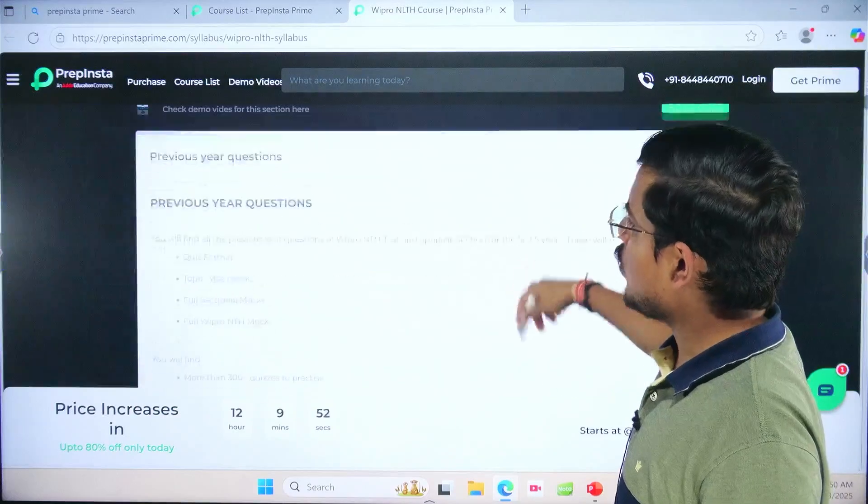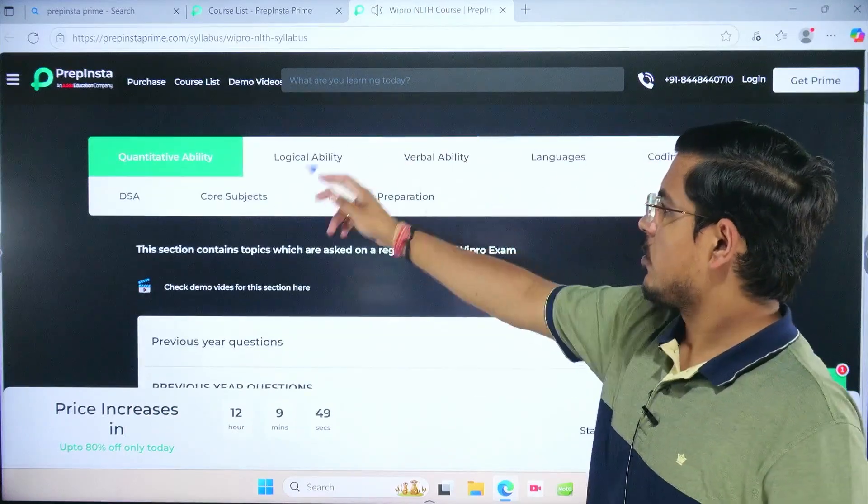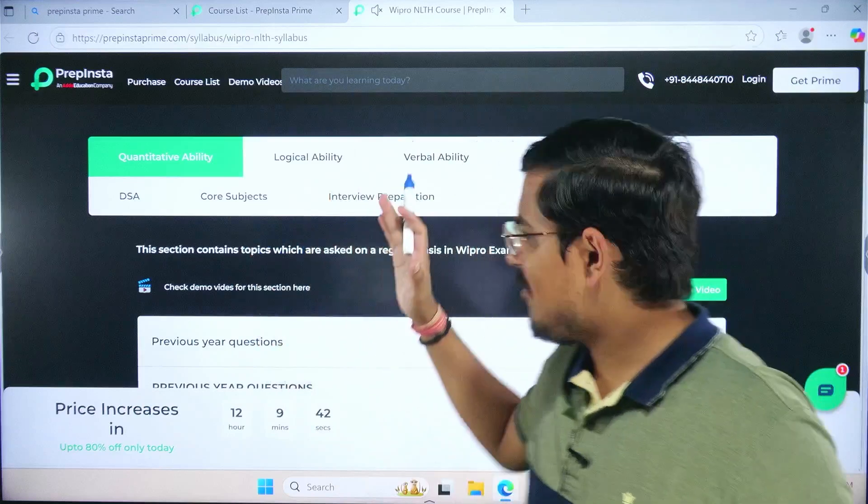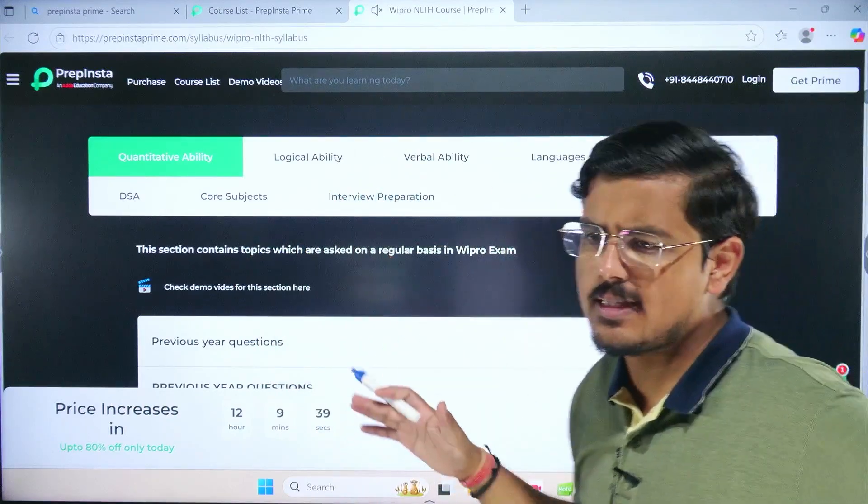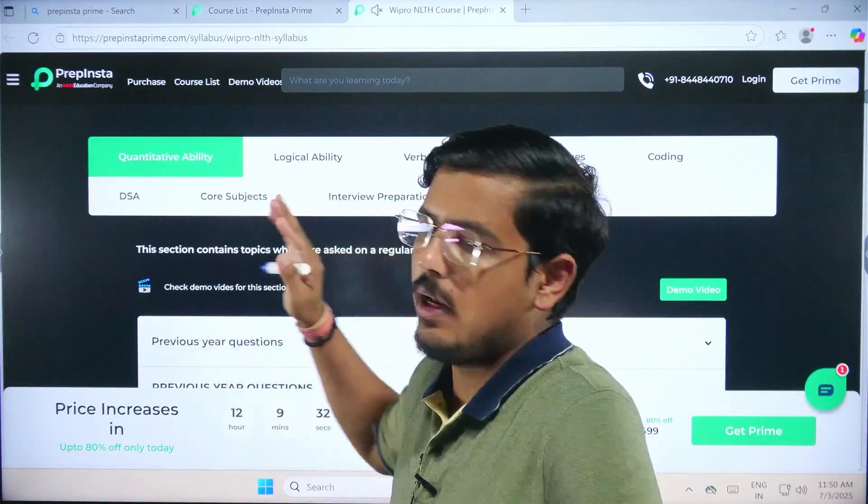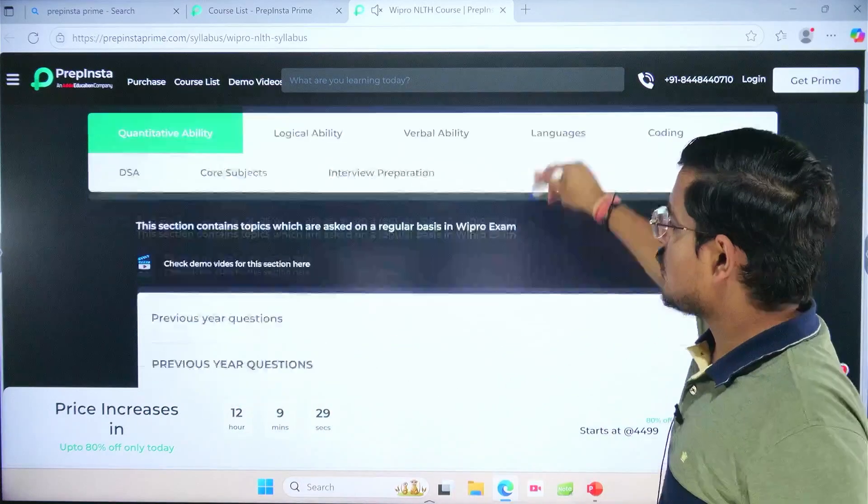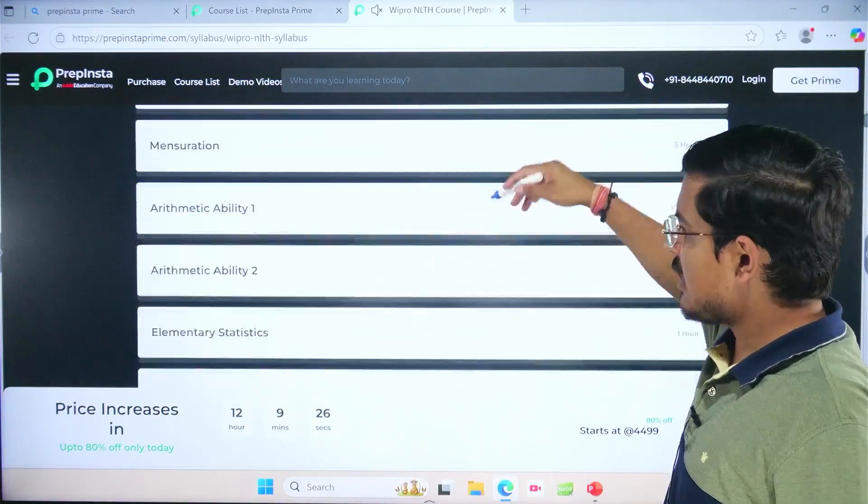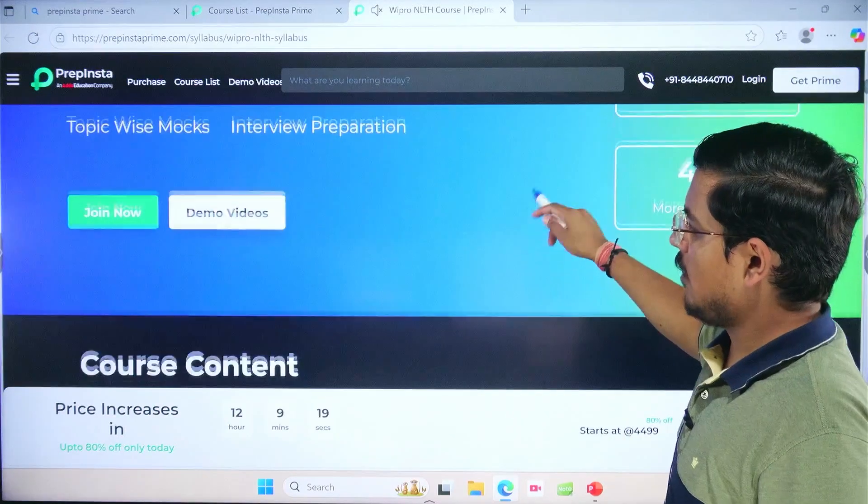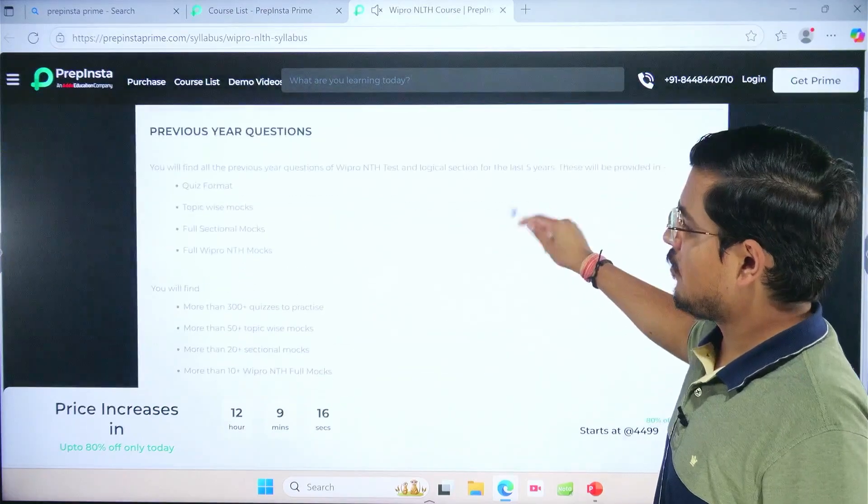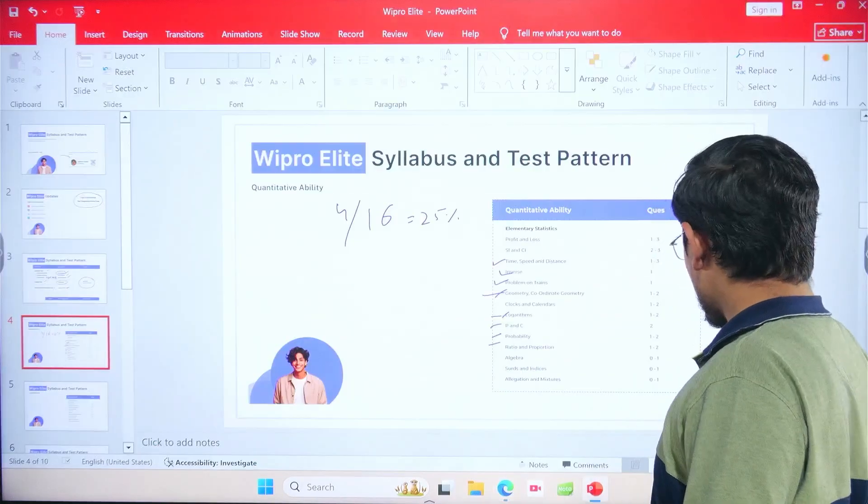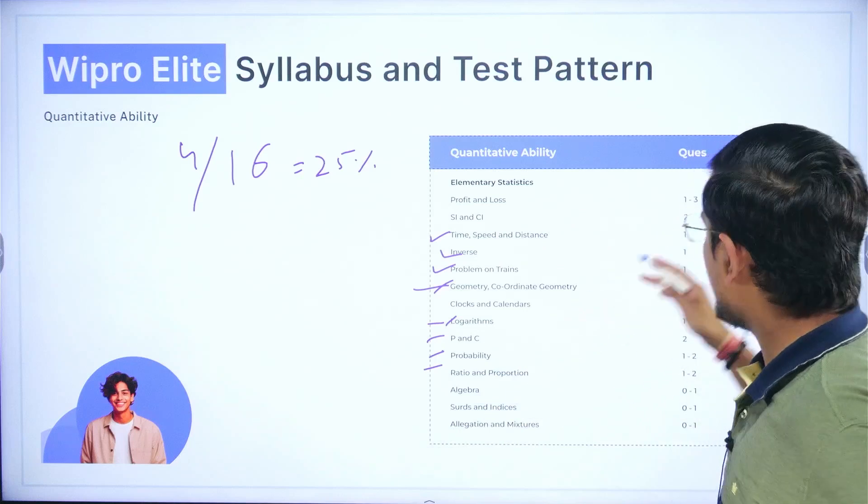You can also go from this course list and go to companies service based and here you click on Wipro. That's Wipro syllabus page, and you can go ahead and learn from these particular areas. Quantitative ability, logical ability, verbal ability, everything is well sorted from languages, coding, DSA, core subjects, everything from very beginning of the online assessment to the last round of business discussion which is interview, everything is sorted here in one go.